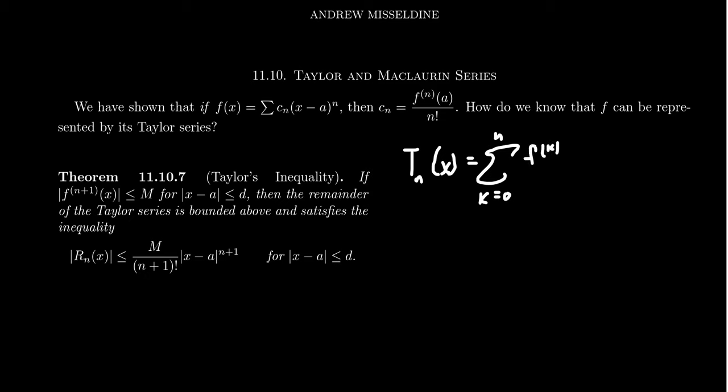evaluated at a, divided by k factorial—that's Taylor's coefficient—times (x - a)^k. This is the formula for the Taylor series, but instead of going towards infinity, we only go to n. As such,